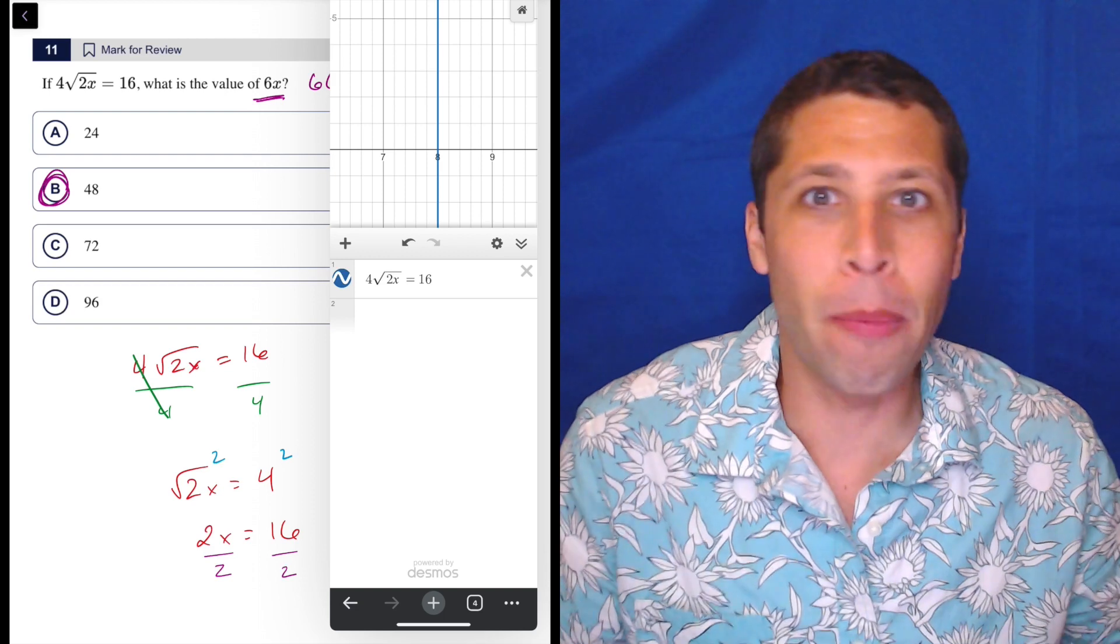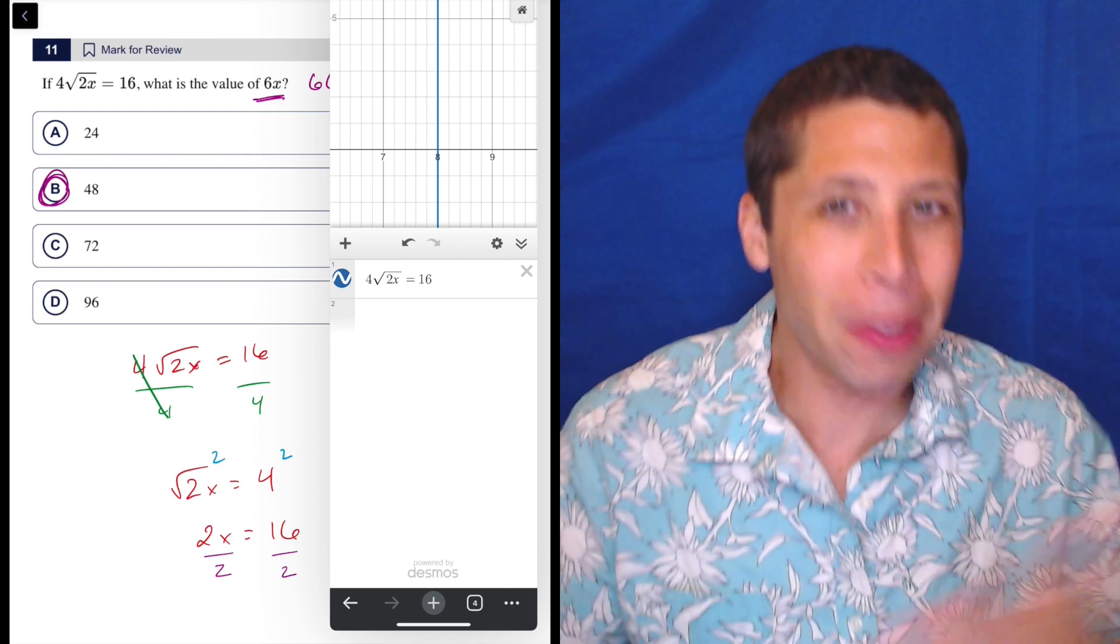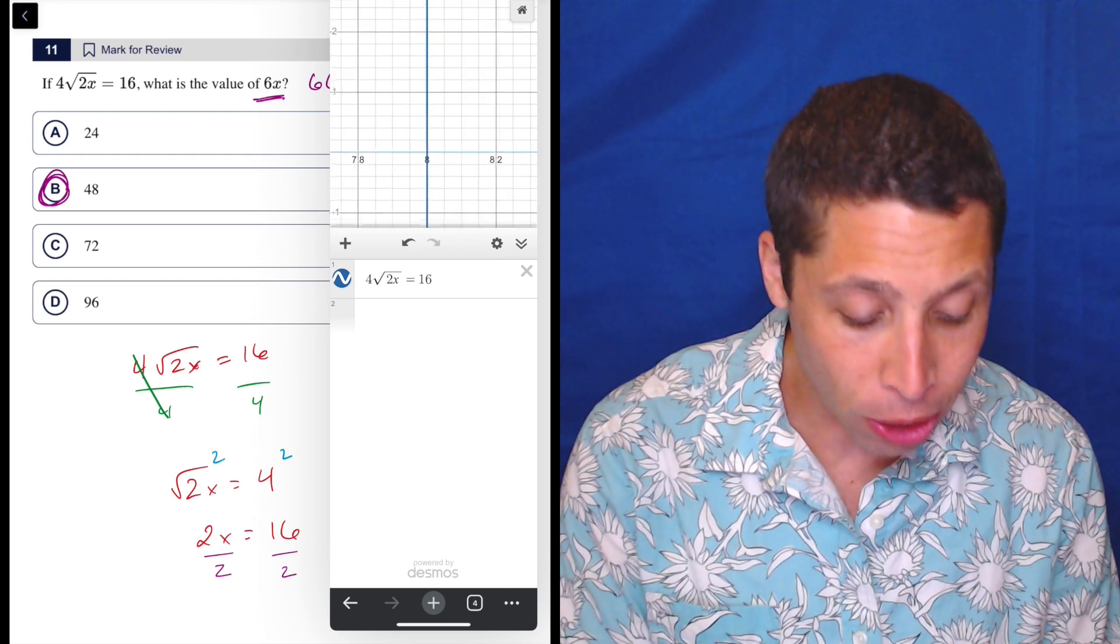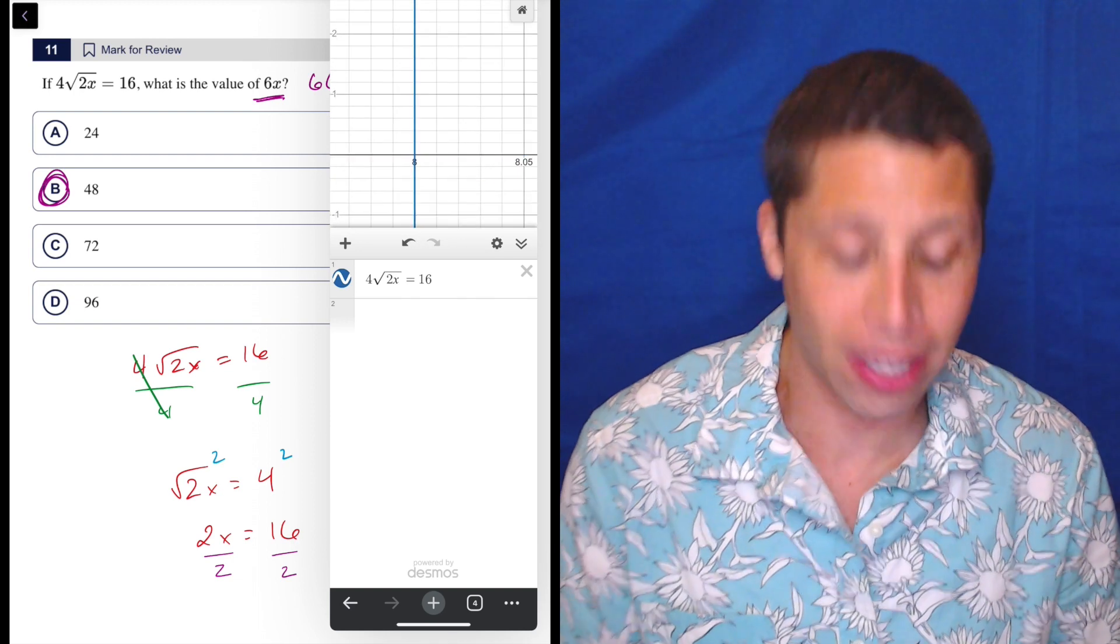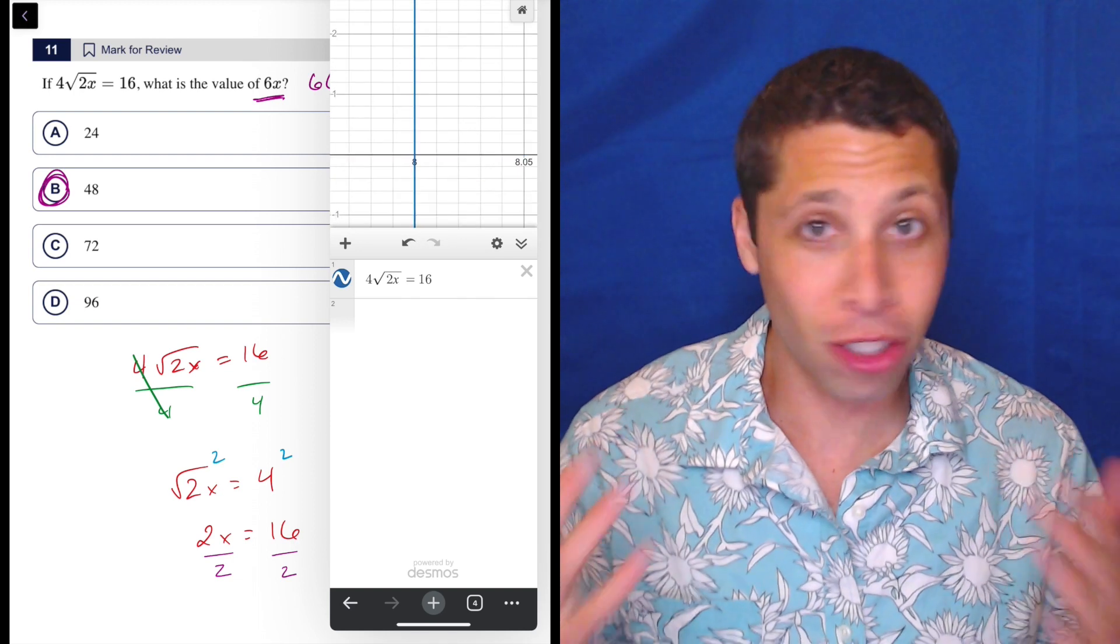There's always a chance it's like 8.0001 or something, but obviously, that's not going to happen on the SAT, and we could keep zooming and even get that level of clarity and see, no, it's just straight up 8.